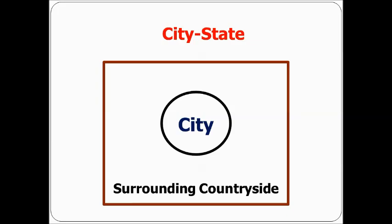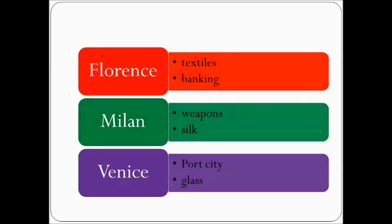We're going to talk about some city-states in the Italian Peninsula. A city-state is a city that includes its surrounding countryside, and it is an independent state — not a country, but basically a city and surrounding countryside as its own independent state. Florence is famous for its textiles and banking. Milan was famous for production of silk and weapons. Venice was a port city — like Savannah, Georgetown, or Charleston — where ships would come in, unload goods, trade, and reload. Venice was famous for producing glass.